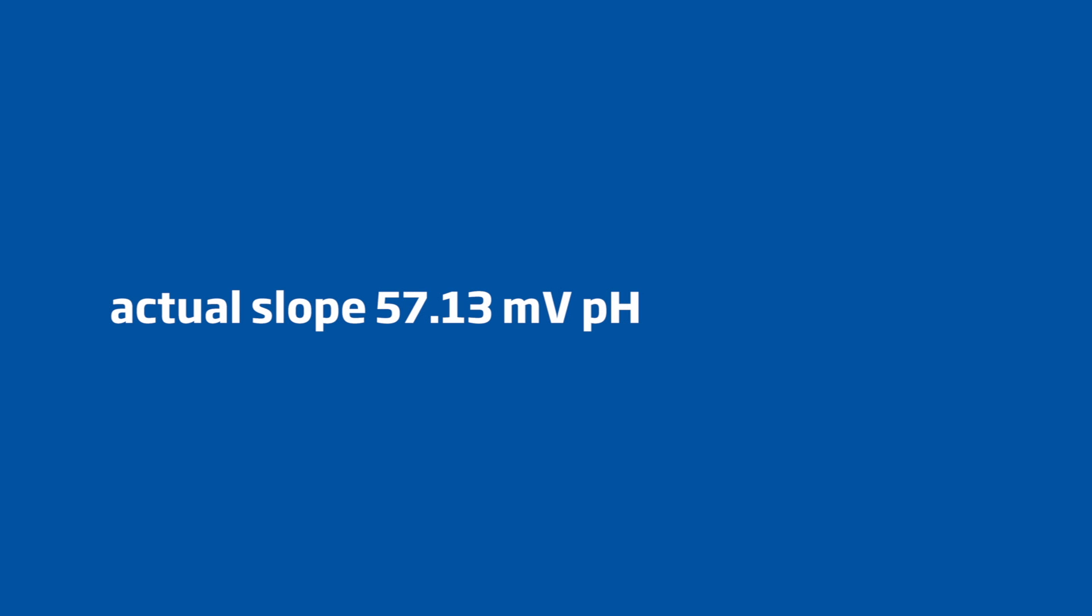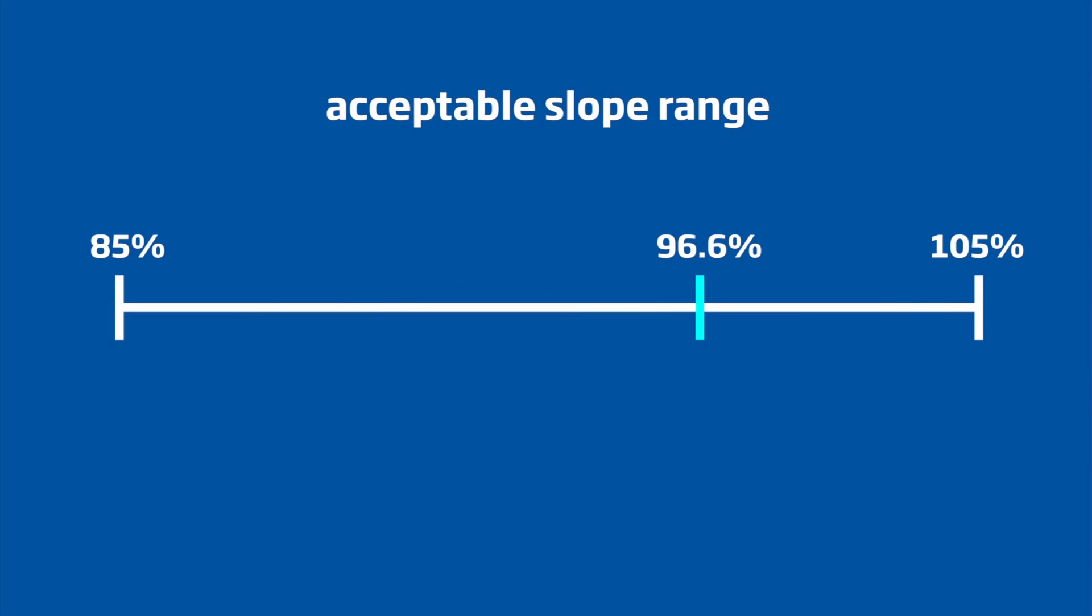The slope of our electrode comes out to 57.13 millivolt per pH unit change. We then divide this actual slope by the theoretical slope as defined by the Nernst equation, 59.16, to determine the slope percentage. The slope percentage of this HI1131B is 96.6 percent, which falls in the acceptable range of 85 to 105 percent.